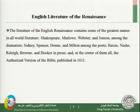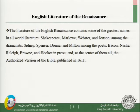The literature of the English Renaissance contains some of the greatest names in all world literature. In drama: Shakespeare, Marlowe, Webster and Johnson. In poetry: Sidney, Spenser, Donne and Milton. In prose: Bacon, Nash, Raleigh, Brown and Hooker. And at the center of all this cultural production is the Authorized Version of the Bible, published in 1611 for the first time in a poetic English language that remains the pride of English literature even today.